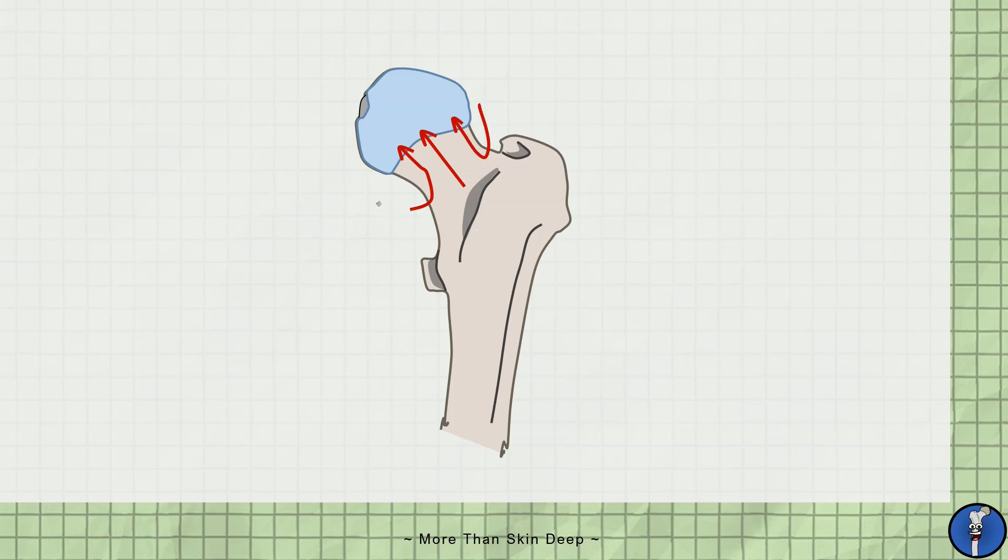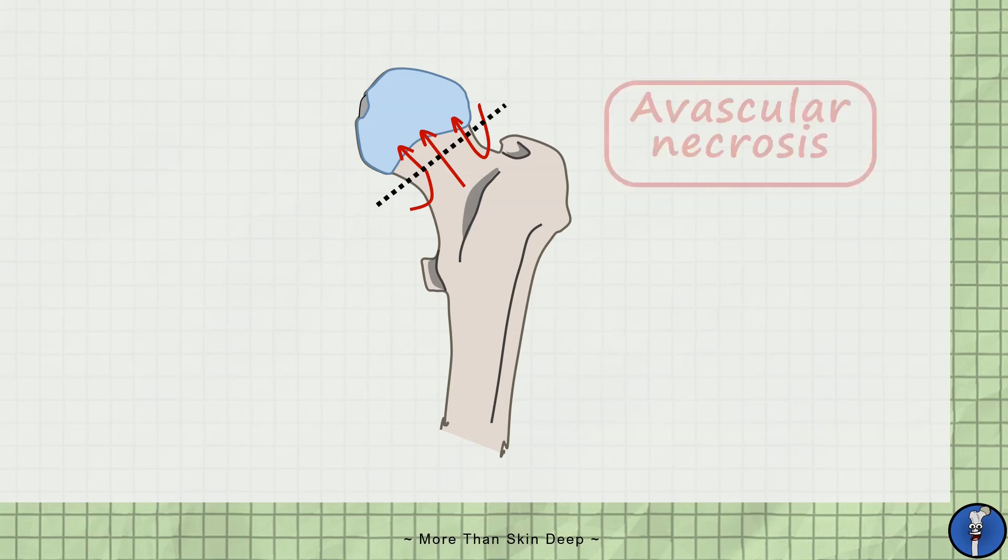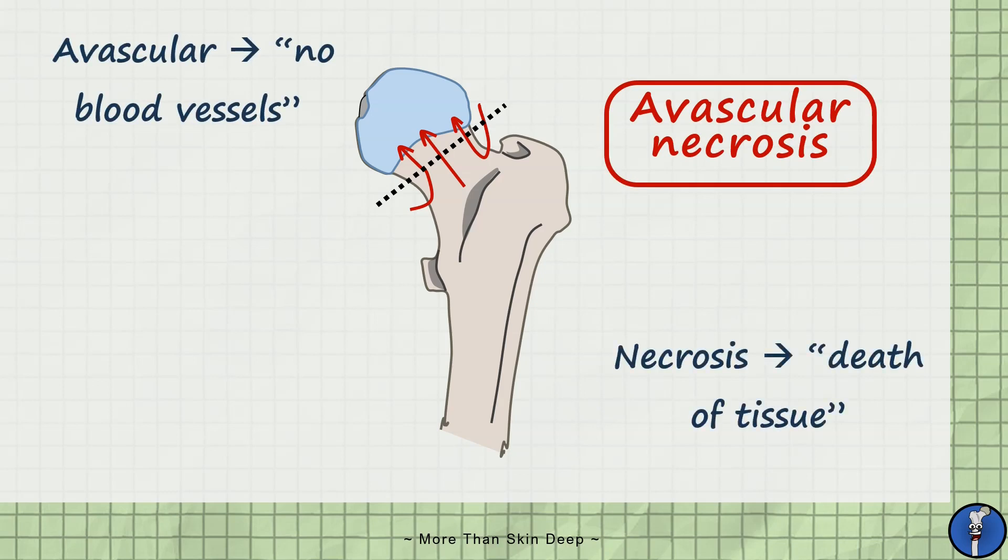This means if the femur is fractured at its neck, the blood supply to the head can easily become compromised. The results of this are known as avascular necrosis, with avascular meaning no blood vessels and necrosis meaning tissue death. The head of the femur can begin to die due to a lack of blood supply to it.